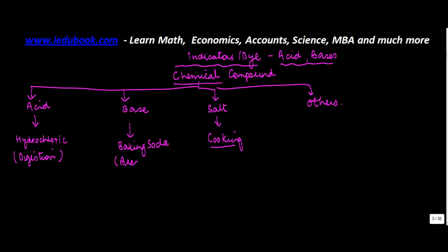Coming back to indicators or dyes - these are things which tell us whether a particular object is an acid or a base. An indicator changes color.